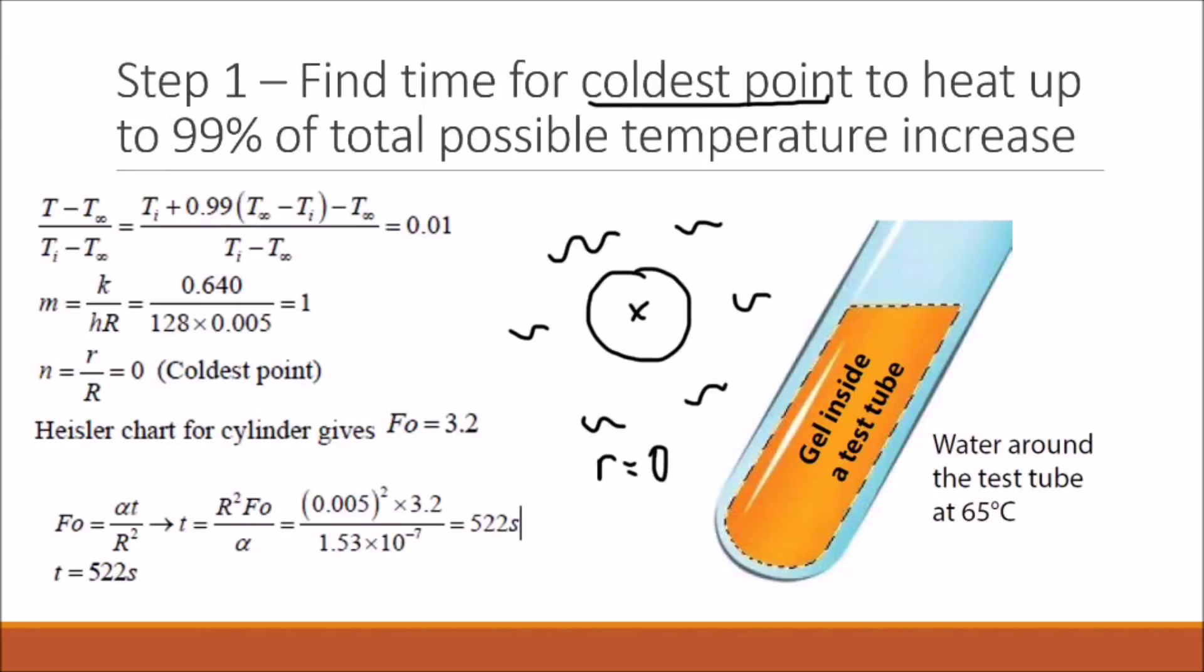To solve the problem, we find our temperature parameter, we find our m, we find our n, and we go to our Heisler chart. This gives us a value of alpha t over r squared of 3.2.